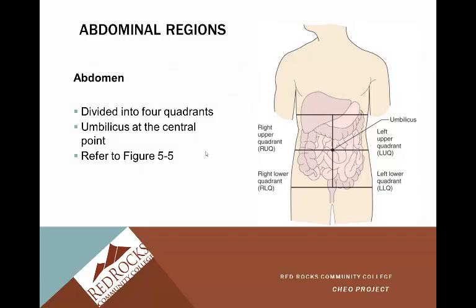Abdominal regions are divided into four quadrants with the umbilicus at the center — this is Figure 5-5 in your book. You'll hear nurses say they heard bowel sounds in all four quadrants. It's also used as a descriptive term. If somebody says 'my stomach hurts,' that's a lot less specific than saying they have pain in the right lower quadrant. When you go back to your nurse and say the patient is complaining of pain at an eight out of ten in the right lower quadrant, that gives much more specific, objective information about what may be going on.